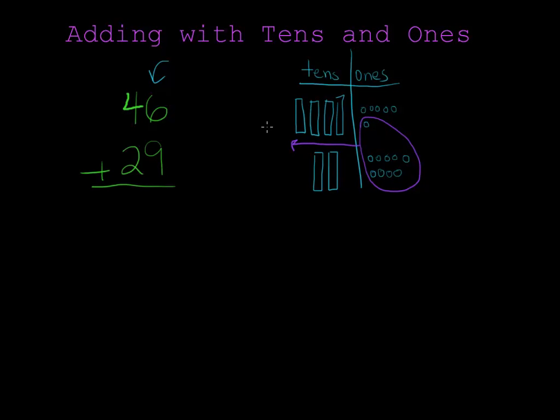I'm going to take that group of 10 and move it over into the tens column. And I show that by putting a 1 in the tens column. Now there are 5 ones left over. 6 plus 9 makes 15 but we have to split it up because the number is too big.